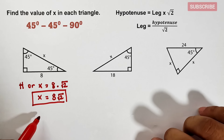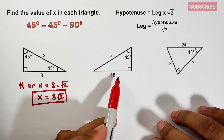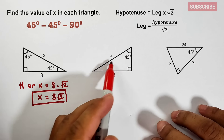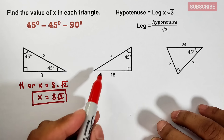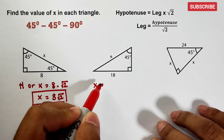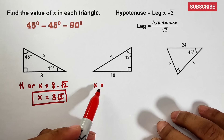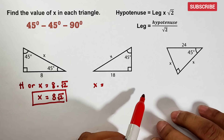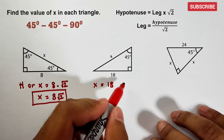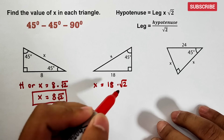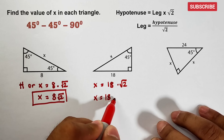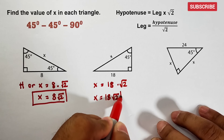Now let's continue with item number 2. What we're missing here is also the hypotenuse. So x = leg × √2 = 18 × √2 = 18√2. This is the answer for item number 2.